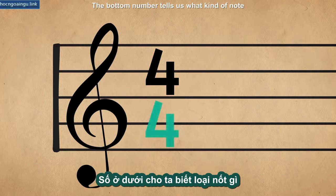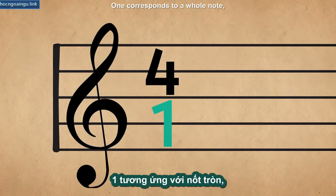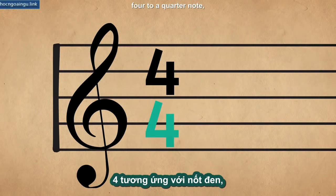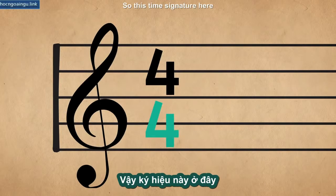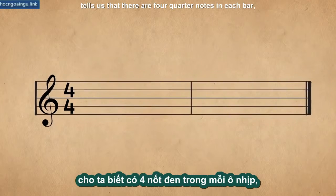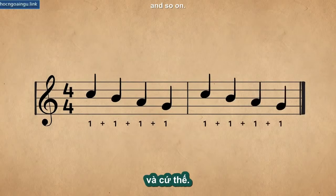The bottom number tells us what kind of note is to be used as the basic unit for the beat. One corresponds to a whole note, two to a half note, four to a quarter note, eight to an eighth note, and so on. So this time signature here tells us that there are four quarter notes in each bar: one, two, three, four, one, two, three, four, and so on.